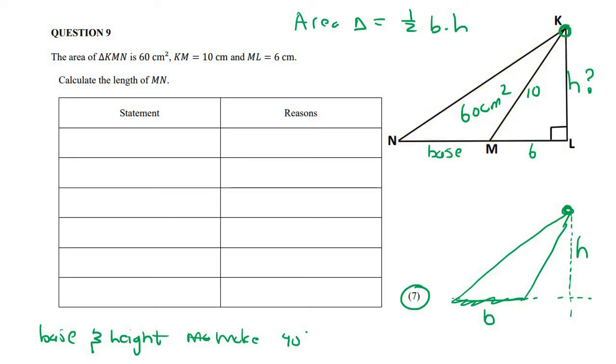So what we can then do is we could use Pythagoras in this triangle over here. Now we know that with Pythagoras, let's just quickly, we know that that's a 10. So we know that with Pythagoras, this is the longest side.